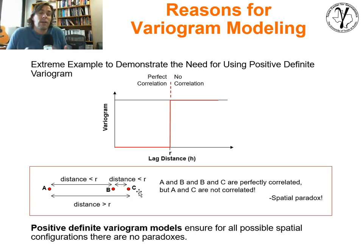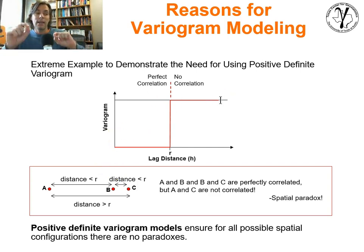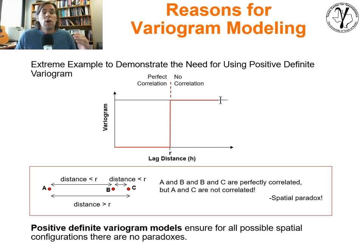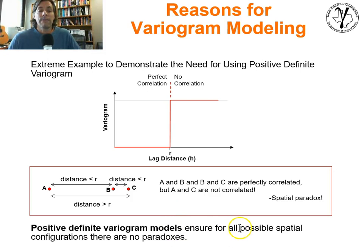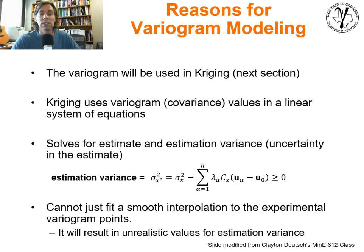Now, you might look at that and say that was pretty obvious. The point is, if you just took your experimental variogram points and fit a function — a spline or any type of function — and ran that through all possible configurations of data distances and offsets, you'd find circumstances under which your model would result in this type of spatial paradox. Not as glaring perhaps, but it would not be spatially consistent with itself between all of the data. Positive definite variogram models ensure that for all possible spatial configurations there will be no paradoxes.